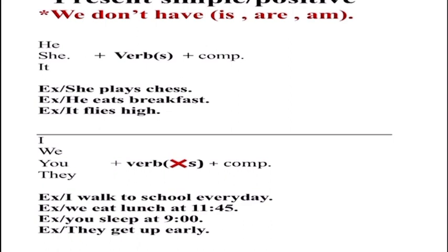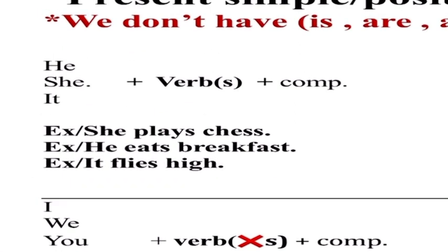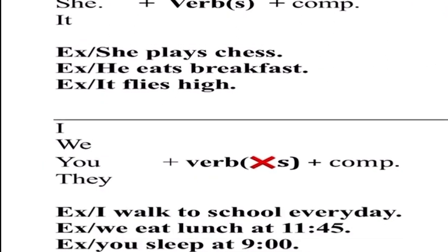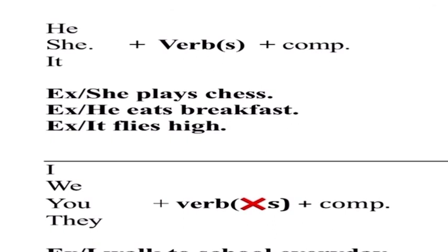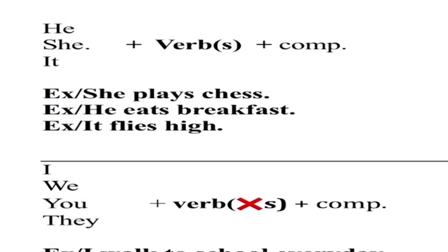Present Simple positive form — let's see the rule. We don't have 'is', 'are', or 'am'. For singular he, she, it — the verb must take 's'. Without 's' it would be wrong. Then we have the complement. For example: 'she plays chess', 'he eats breakfast', 'it flies high'. With 'she' we have 'plays' — we cannot say 'she play chess', we have to say 'she plays chess'.